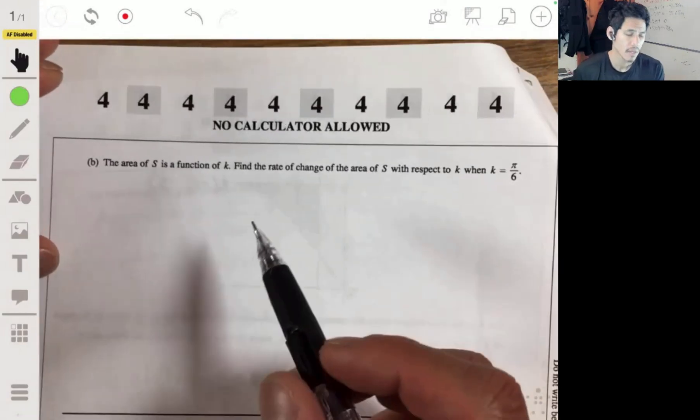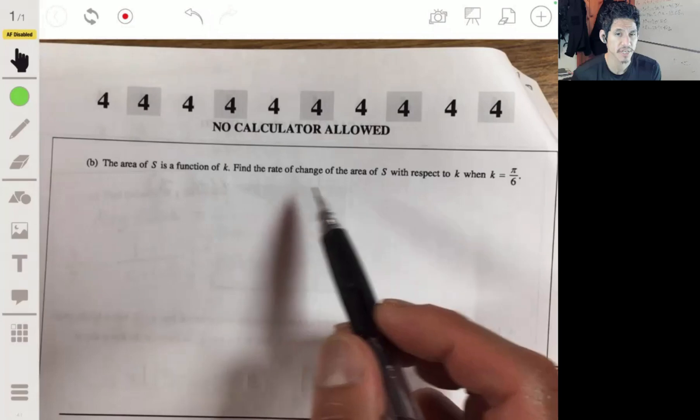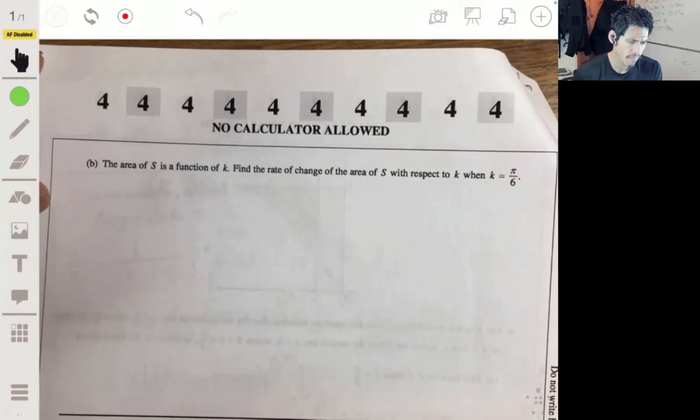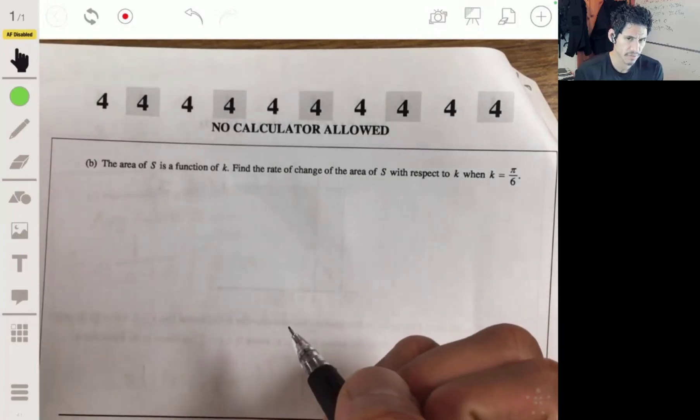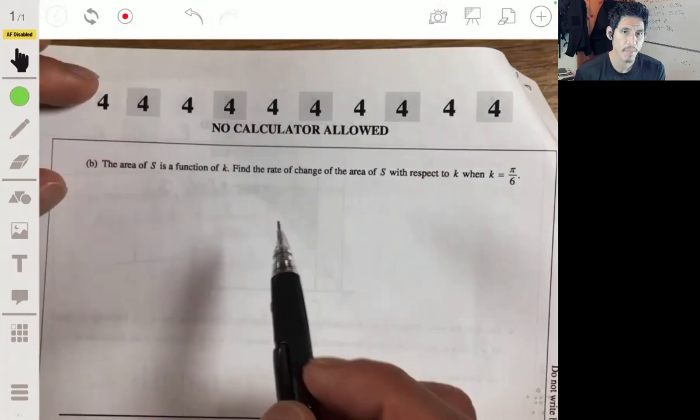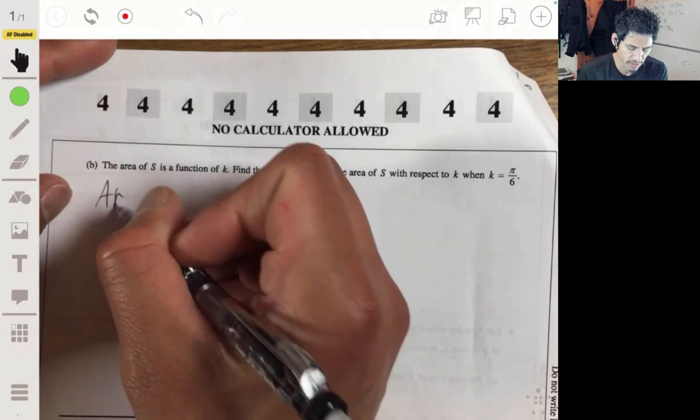Part B, the area of S is a function of k. Find the rate of change of the area of S with respect to k when k equals 6. This one students get confused. Just first find the area. Well, let me first we'll set up the area.